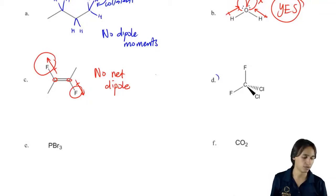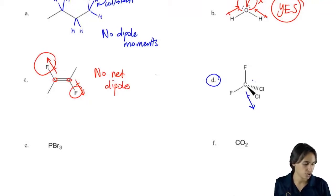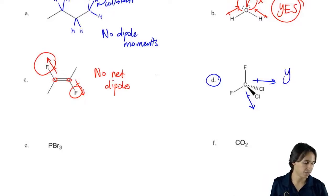So then let's talk about D. D had two dipoles as well - one going in this direction, one going in this direction. Do they perfectly cancel out? No. So this would have a net dipole.